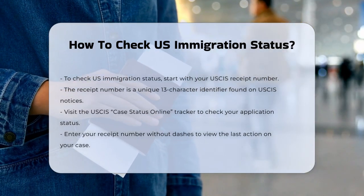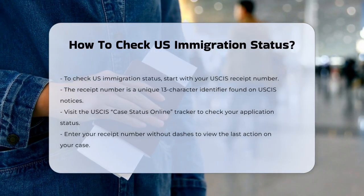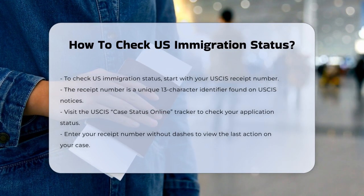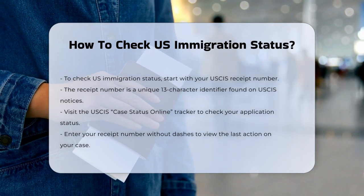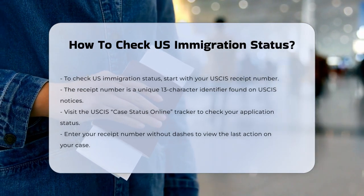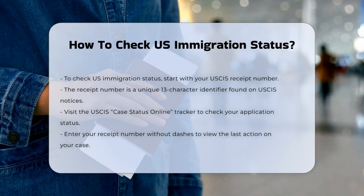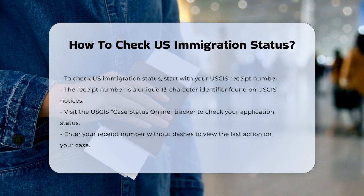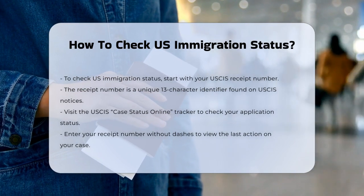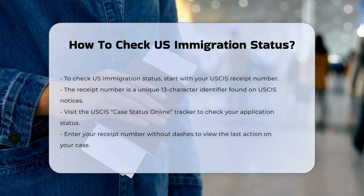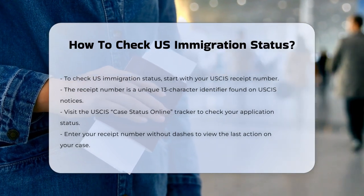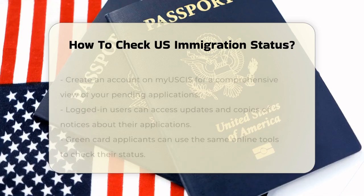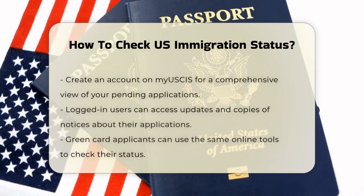To check your case status online, go to the USCIS Case Status Online Tracker. Enter your receipt number, omitting any dashes, and click Check Status. This will show you the last action taken on your case and any next steps you need to take.